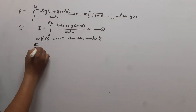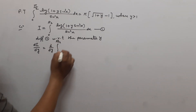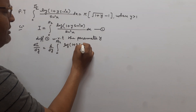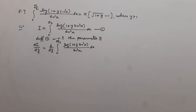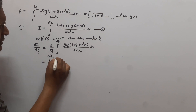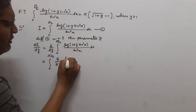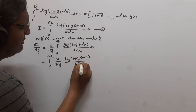This can be written as dI/dy = d/dy of ∫ log(1 + y·sin²x) / sin²x dx. We write the differential operator d/dy on both sides. In the right-hand side, this d/dy goes inside the integral sign and converts to a partial derivative, so this can be written as ∫ (∂/∂y) of log(1 + y·sin²x) / sin²x.